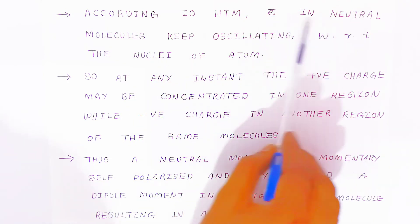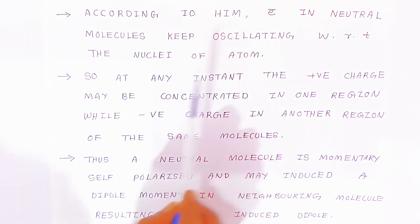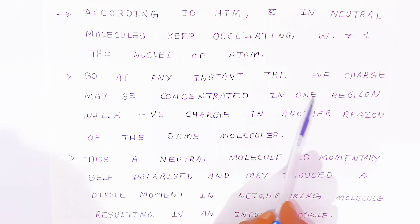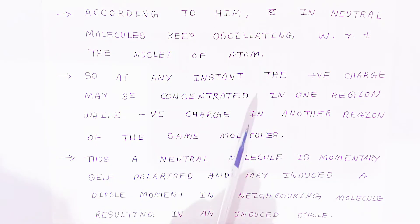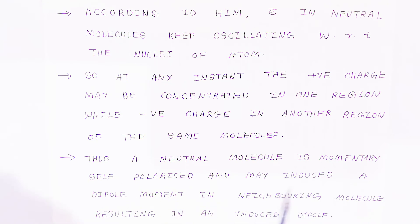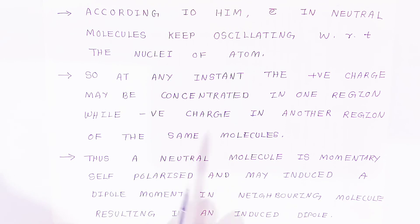At any instant, the positive charges may be concentrating in one region while negative charge in another region of the same molecule. Thus, a neutral molecule is momentarily self-polarized and may induce dipole moment in the neighboring molecules, resulting in the induced dipole. This way, dipole is introduced in the neighboring molecule, which is why it is called induced dipole.